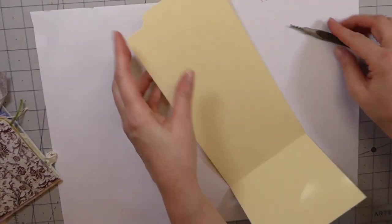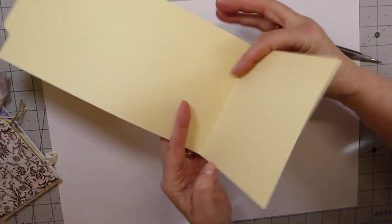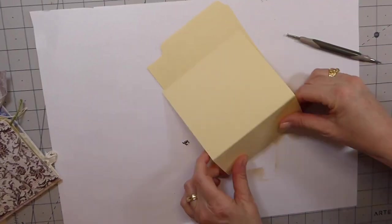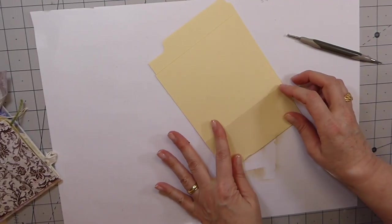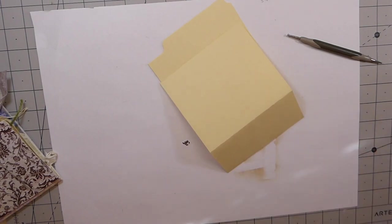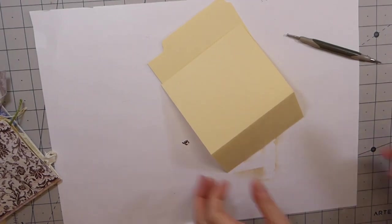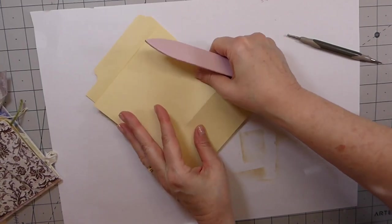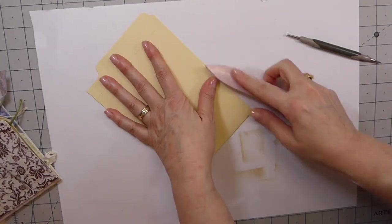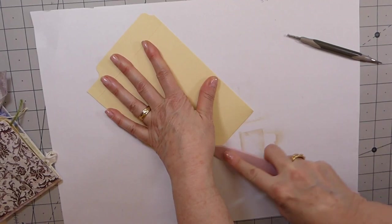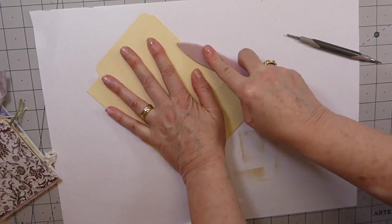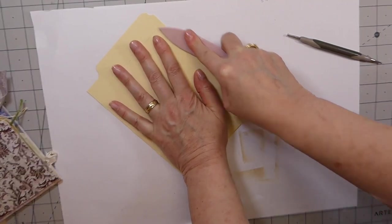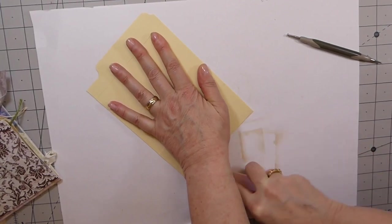And then just sit that over for one minute. So this is the original fold on the file folder, so we're just going to ignore that and pull this up and burnish that score line.